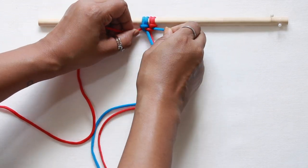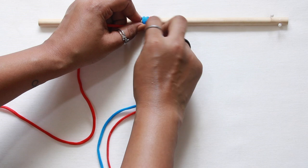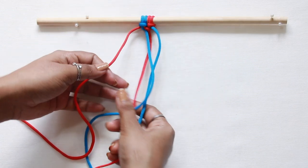Now we have half of a square knot. For the other half, repeat the same thing from the other side.